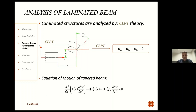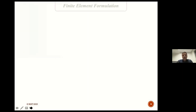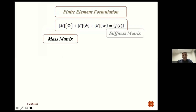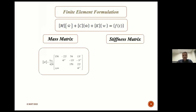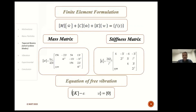By using CLPT theory, sigma 2-3, sigma 1-3, and sigma 3-3 are all equal to zero. By deriving the equation of motion of tapered laminated beams, we can calculate the mass matrix, stiffness matrix, and in the next step, the natural frequencies of the structure.